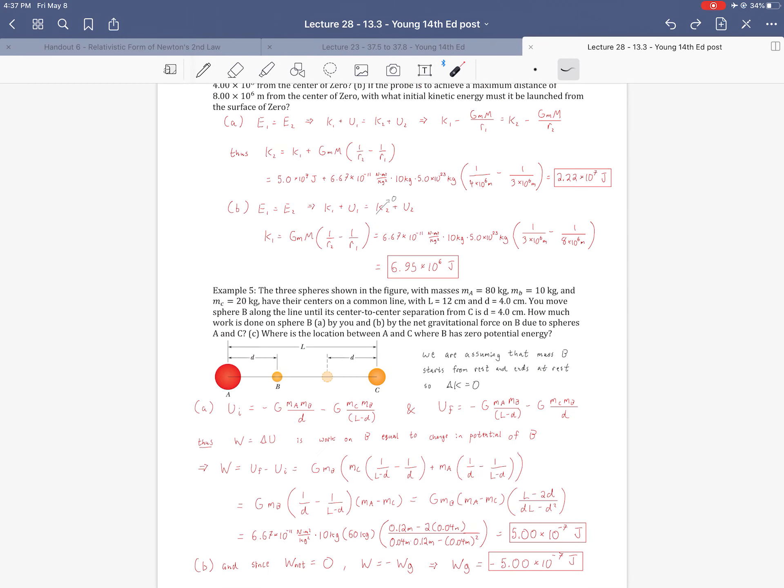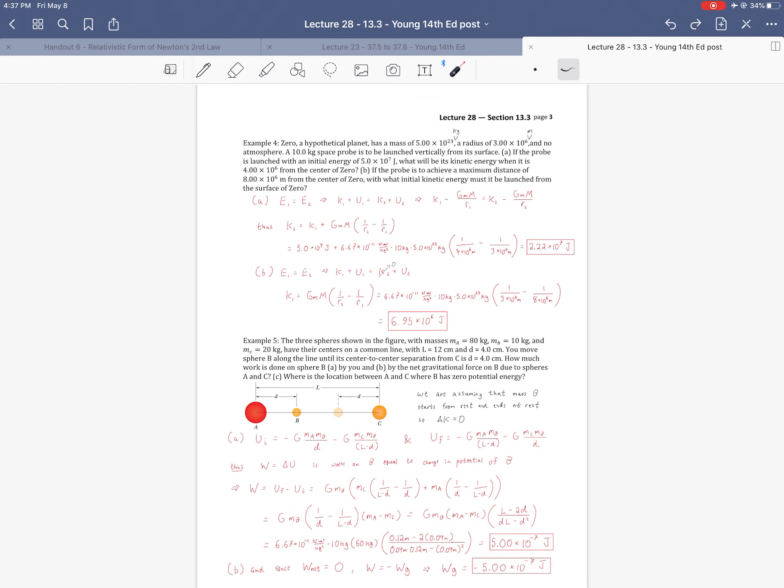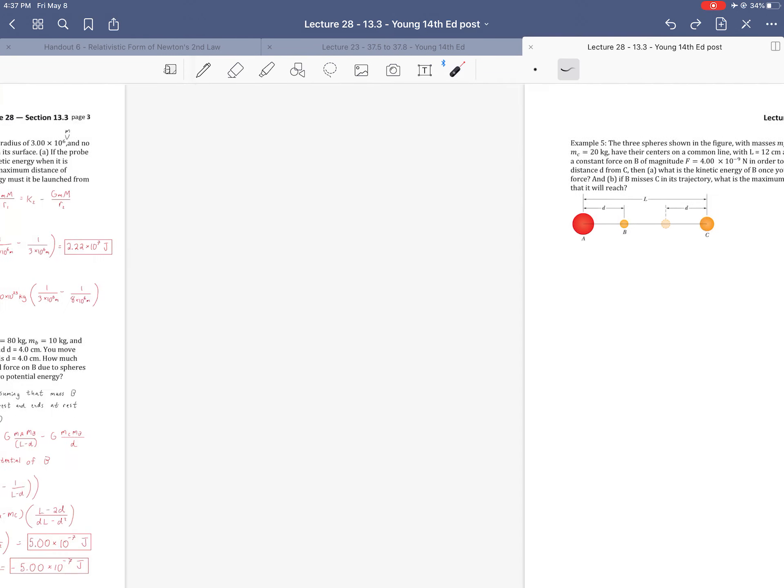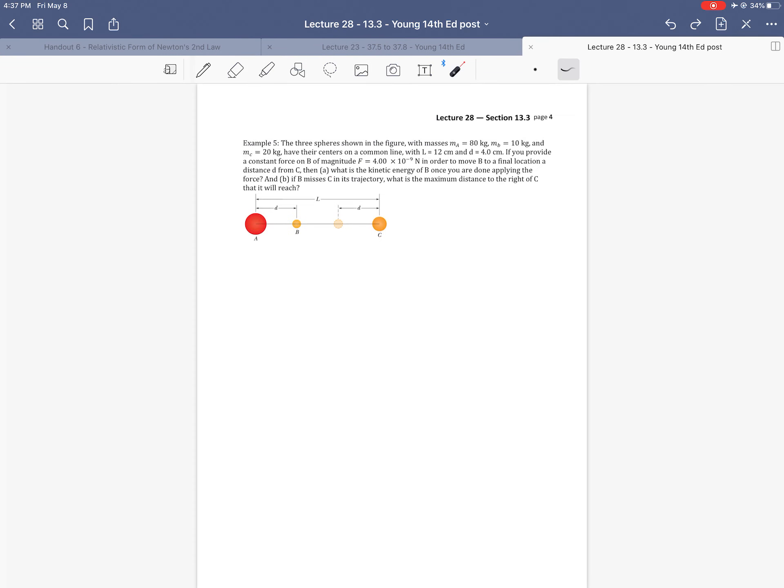So hopefully these examples give you a good idea, along with the homework, of what to expect for universal gravitational potential energy problems. And I've left one for practice for you, which is a variation that does involve kinetic energy of the example you just saw. Thank you for watching.